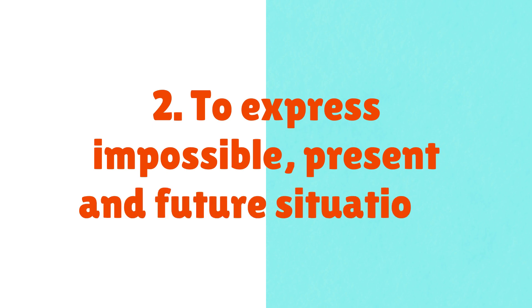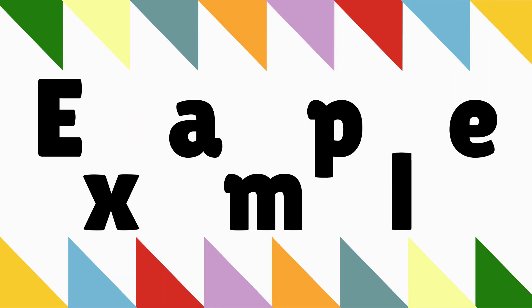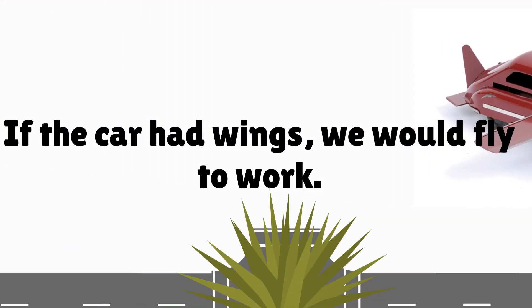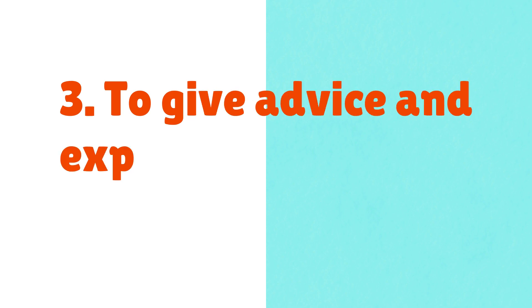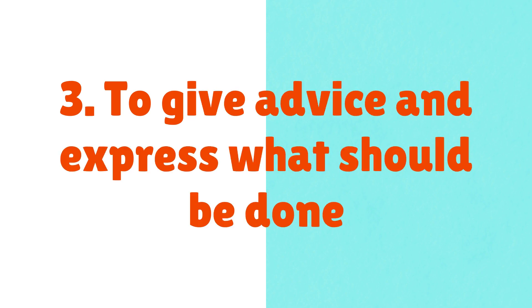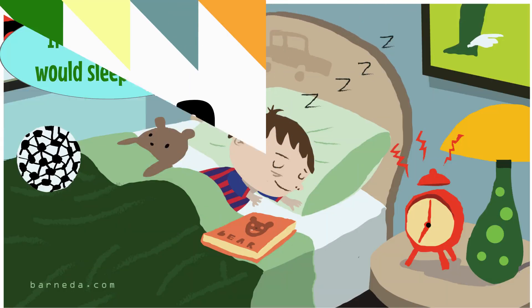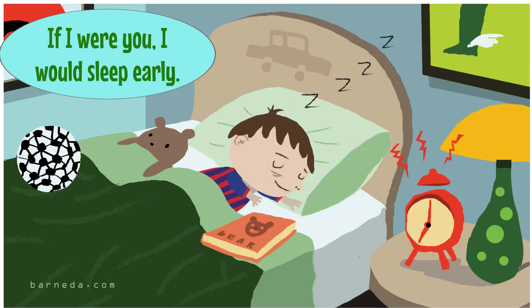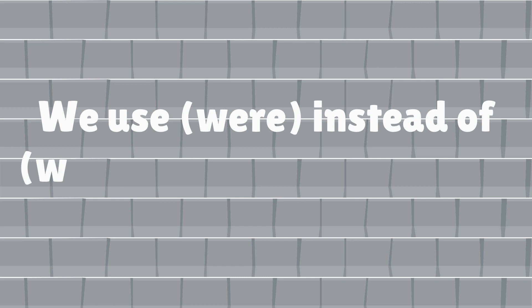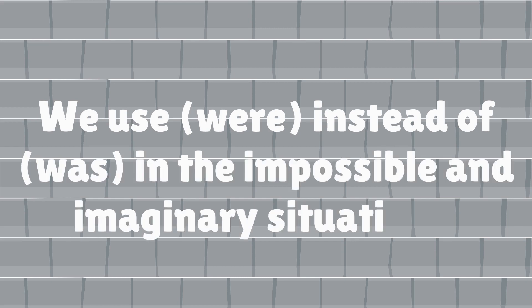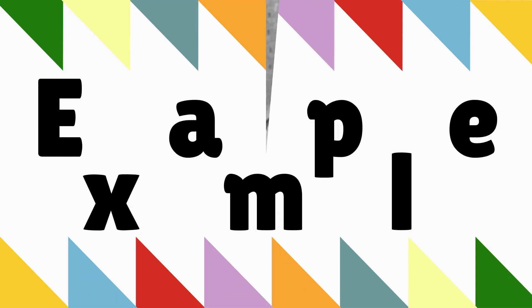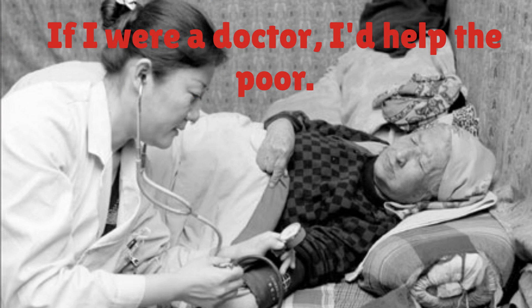Uses: To talk about impossible or imaginary situations. Example: If the car had wings, we would fly to work. To give advice and express what should be done. Example: If I were you, I would sleep early. We use 'were' instead of 'was' in impossible and imaginary situations. Example: If I were a doctor, I'd help the poor.